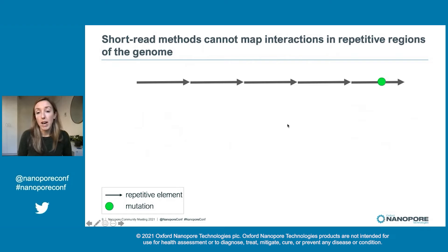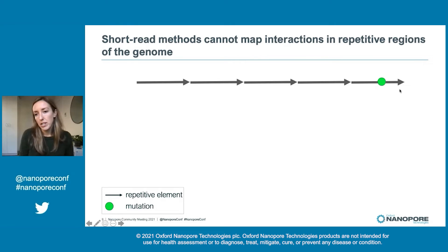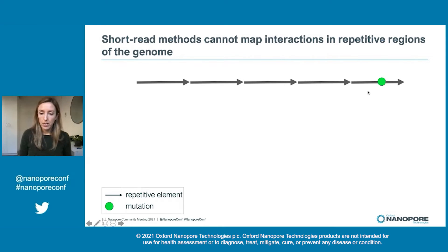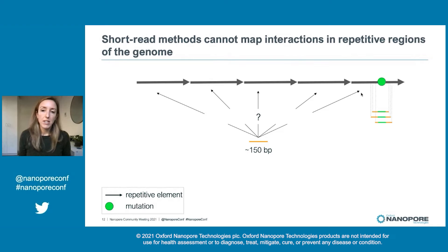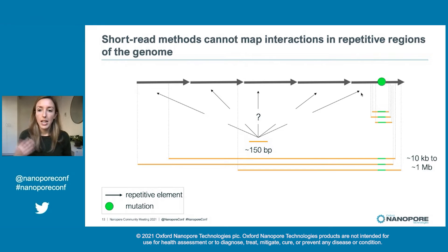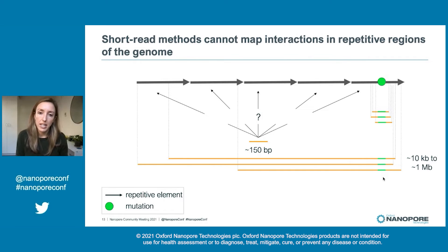Finally, short read methods can't map interactions in repetitive regions of the genome. Here I show a stretch of the genome where each arrow is an identical sequence of DNA repeated head to tail, and the only part of the sequence that diverges is a mutation. A short read from one of these methods that mapped to this sequence would also map to all other positions in the reference. The only short reads you can confidently map are ones that span a mutation or some kind of landmark. If we could instead use long reads, we could anchor our reads in this landmark or mutation and extend into the repetitive region that you can't see with short read methods.